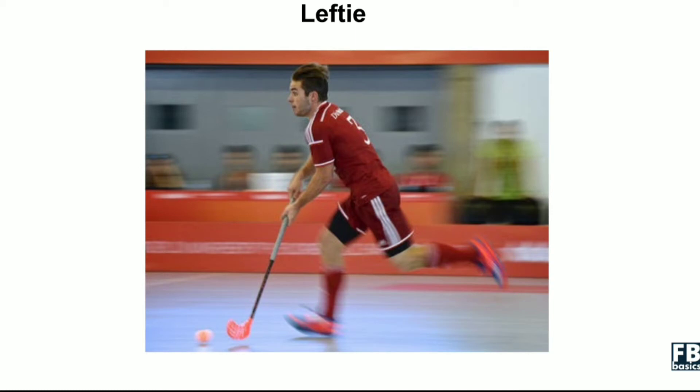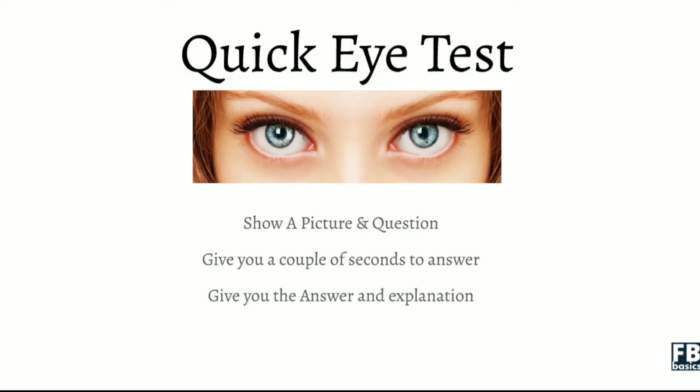I've included pictures from different angles so that you are able to differentiate. From different angles, by looking at a player, you'll be able to tell whether they are a lefty or righty. So now what we're going to do next will be a quick eye test for you. I'm going to show a picture and also a question, give you a couple of seconds to answer — whether it is lefty, righty, etc. After which, I'll give you the answer and also a quick explanation. Ready? Let's go.